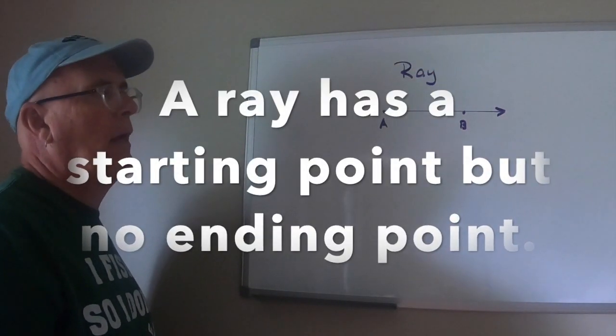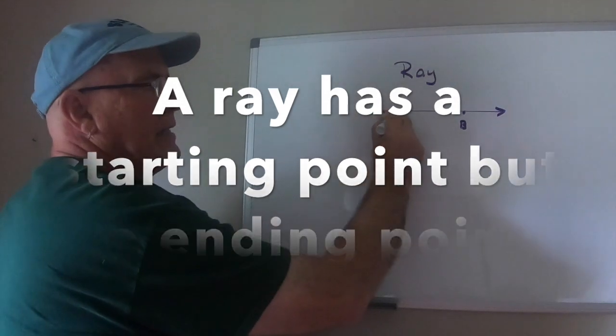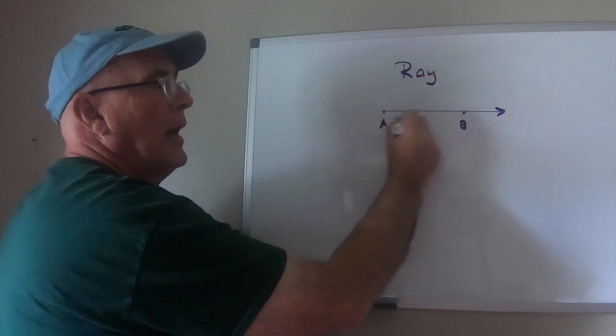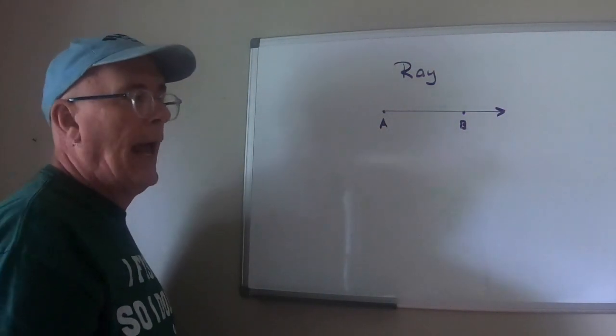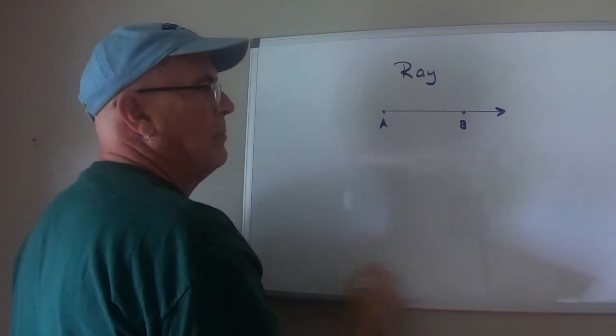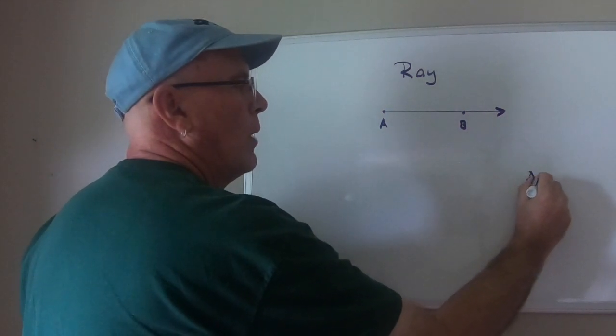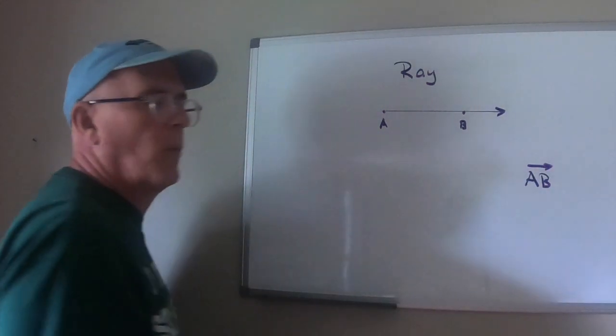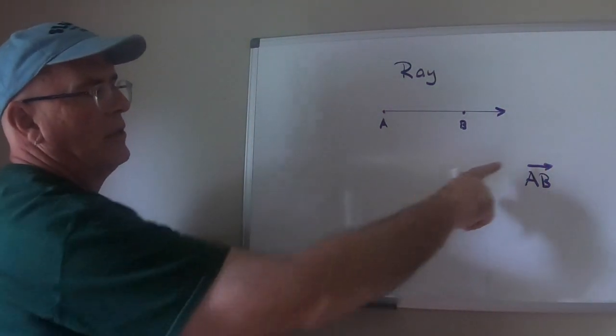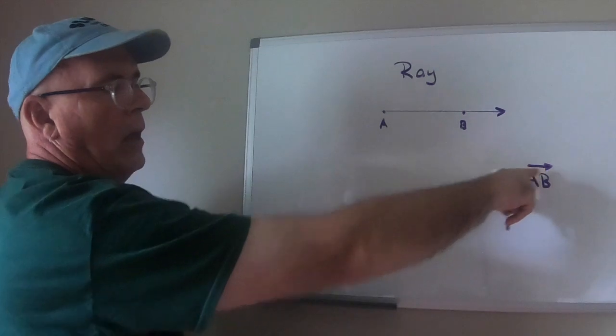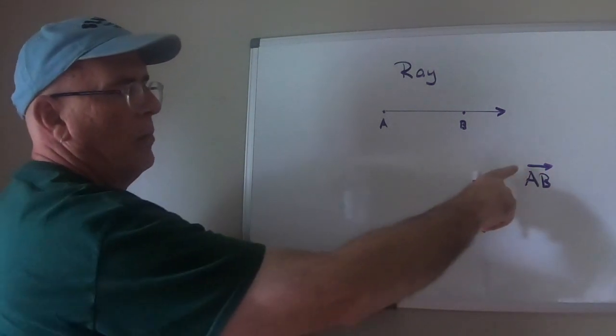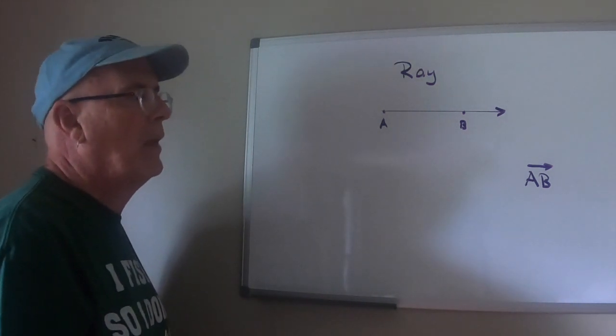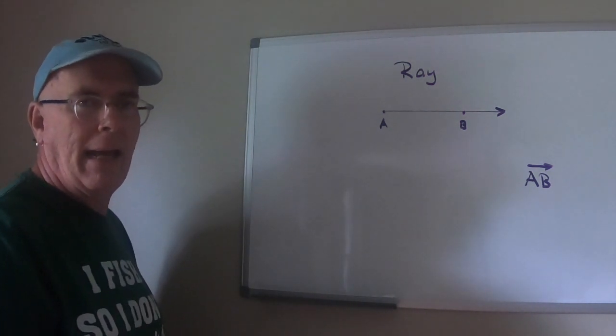Now a ray moves like a line. It's a series of points. It moves in one direction but again, it has a starting point but it has no ending point and a ray, this ray can be called ray A, B and the symbol for ray A, B is above the A, B you draw a ray. It has a beginning point but no ending point. Sorry about that. So that is ray A, B.